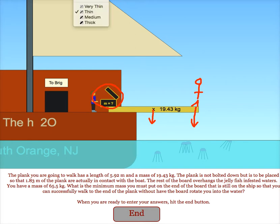Once you have your two masses, what you want to do next is find your torques. So realize that the pivot point is going to be where the board meets the boat.